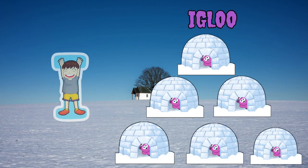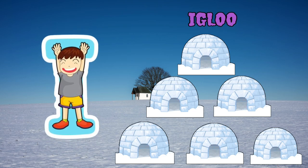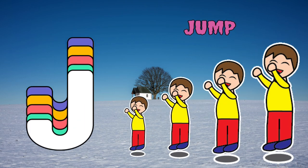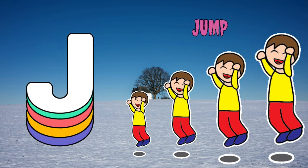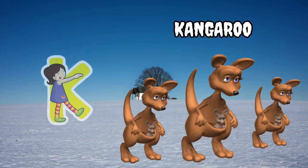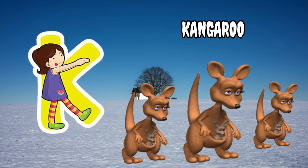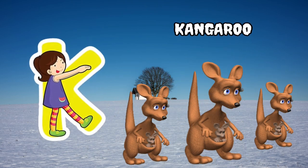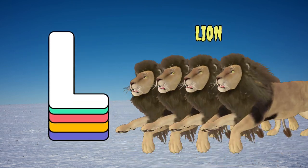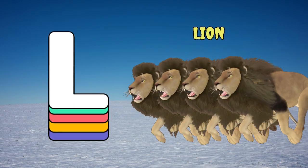I is for igloo, i-i-igloo. J is for jump, j-j-jump. K is for kangaroo, k-k-kangaroo. L is for lion, l-l-lion.